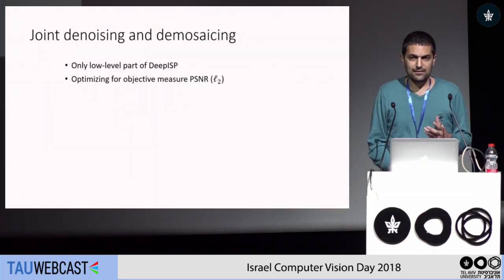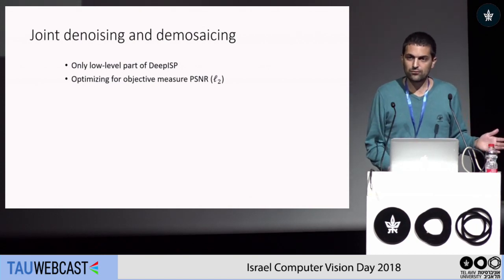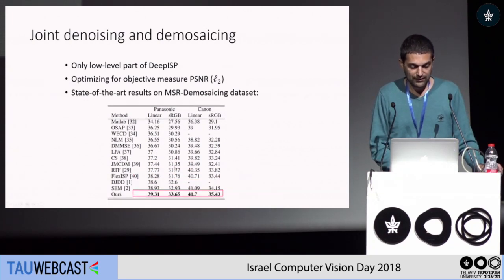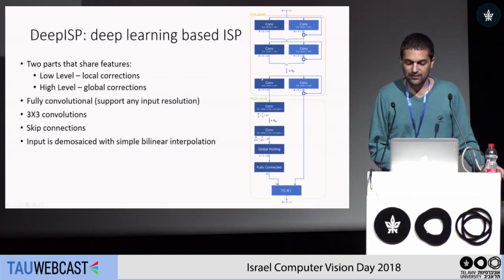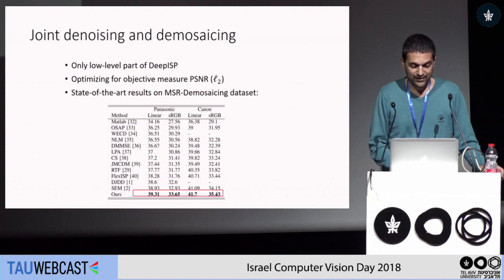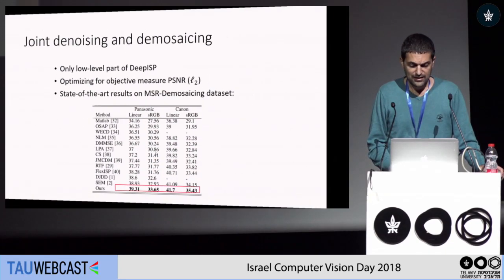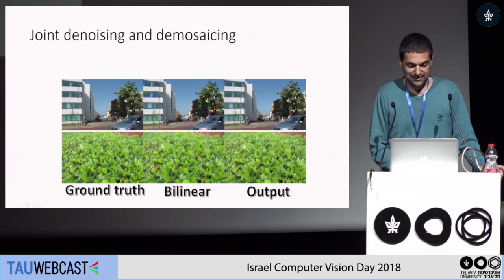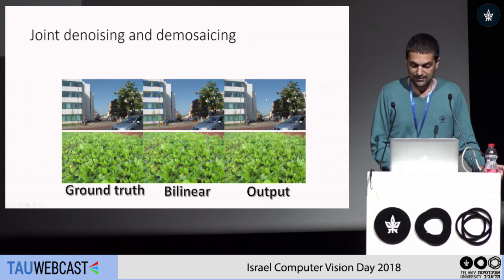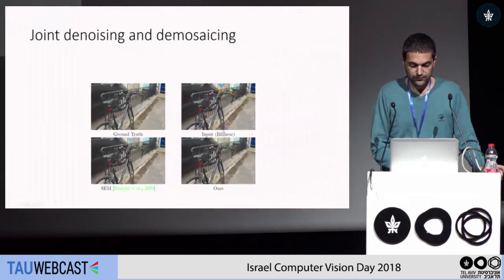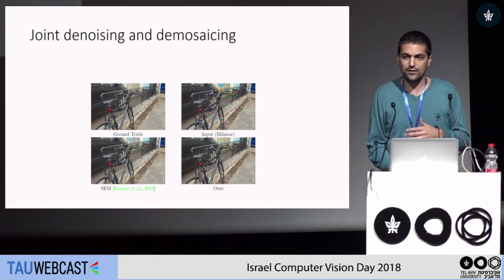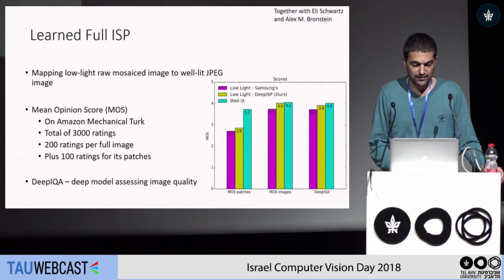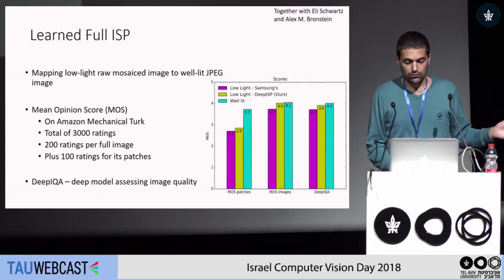We took lots of images captured in low-light and high-light conditions, and showed that if we look just at the low-light images and focus on the denoising and demosaicing problem, comparing to other algorithms, our low-level network gets better performance than other algorithms that just do denoising and demosaicing. Comparing to the bilinear algorithm and to the previous state-of-the-art, you can see that here we don't get more artifacts. The more interesting thing is not just doing denoising and demosaicing, but doing the whole ISP.